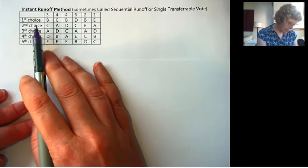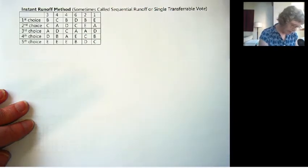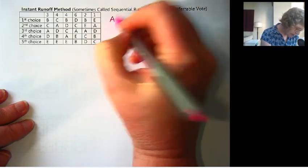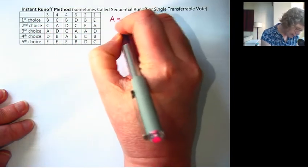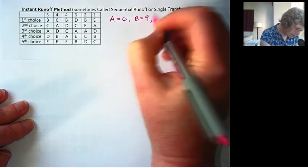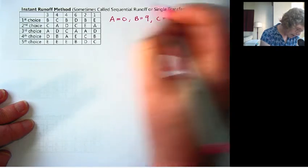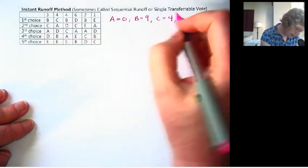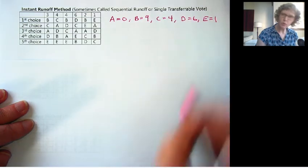We start with the first choices. We're actually going to start with what we had previously in plurality. A had 0 for the first choice, B had 9, C had 4, D had 6, and E had 1.